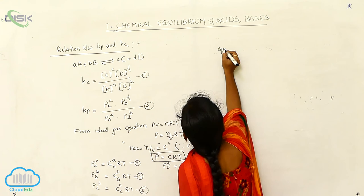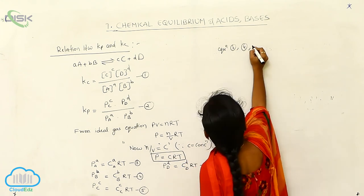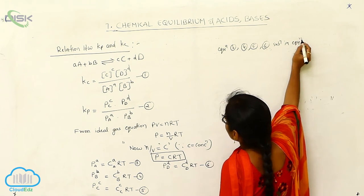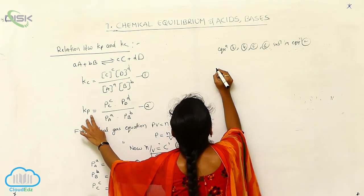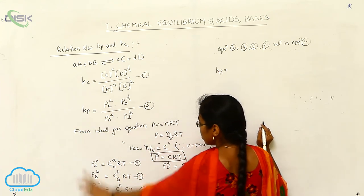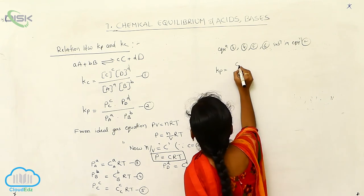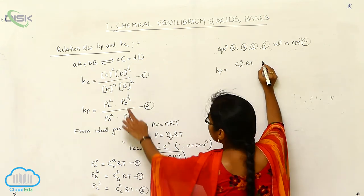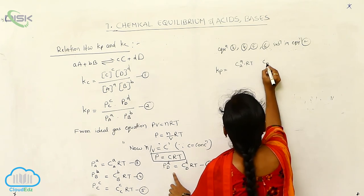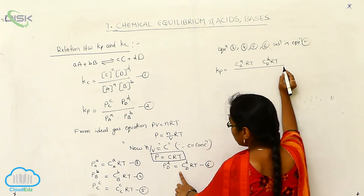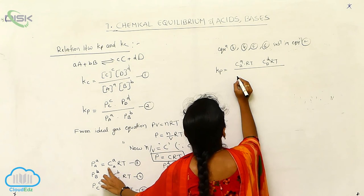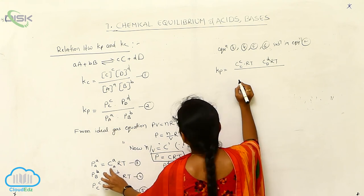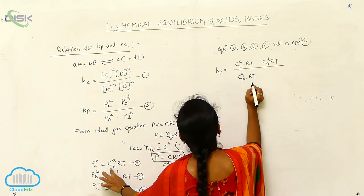Substituting equations 3, 4, 5, and 6 into equation 2 for Kp. In the place of Pc, we write (Cc)^c × RT. In the place of Pd, we write (Cd)^d × RT. In the place of Pa, we write (Ca)^a × RT. In the place of Pb, we write (Cb)^b × RT. So now Kp is expressed in terms of concentrations and RT terms.